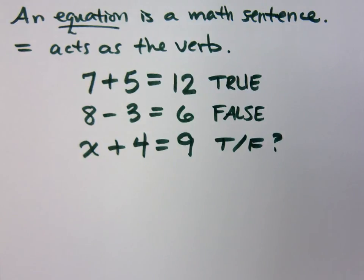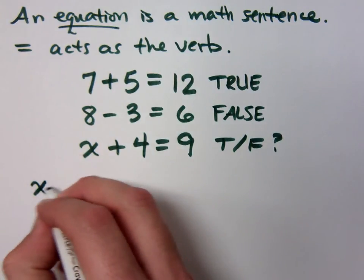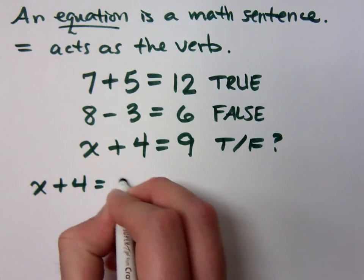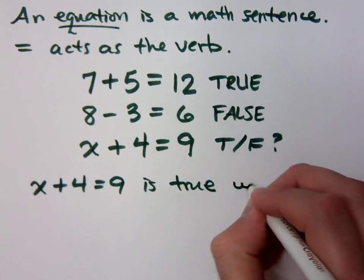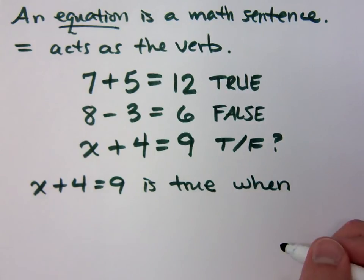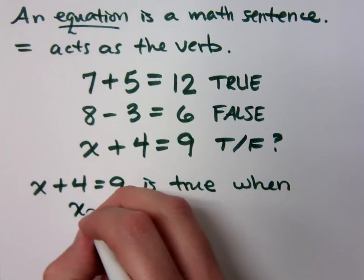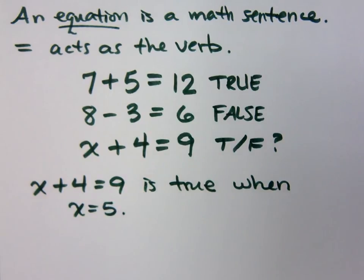Here's what I do know. I know that X plus 4 equals 9 is true when what? It's true when X equals 5, right? Do you all believe that? If I let X equal 5, if I replace X with 5, I get a true statement because 5 plus 4 is 9. Do you all agree with that? Yes.